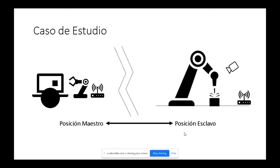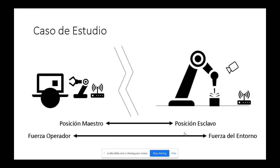La teleoperación bilateral realimenta el estado del robot esclavo hacia el sitio local, y a partir de ahí se construye una fuerza hacia el operador que representa la desincronización entre el maestro y el esclavo. Volviendo al ejemplo de la cirugía, el cirujano estaría sintiendo qué tan lejos está el bisturí de donde quería que estuviese. Es deseable además que el cirujano pudiese sentir la fuerza real que está ejerciendo el bisturí en el tejido.